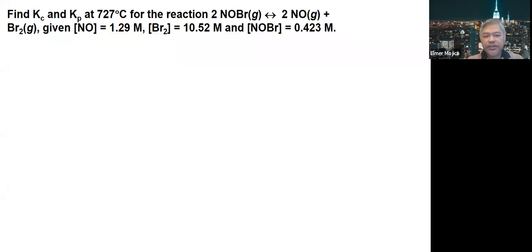Find Kc and Kp at 727°C for the reaction 2NOBr producing 2NO and Br2. Given NO is 1.29 molar, Br2 is 10.52 molar, and NOBr is 0.423 molar. To solve this problem,